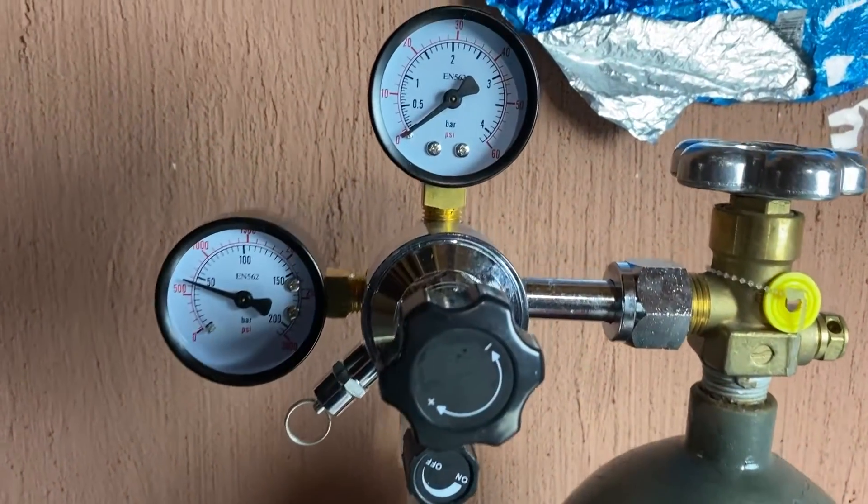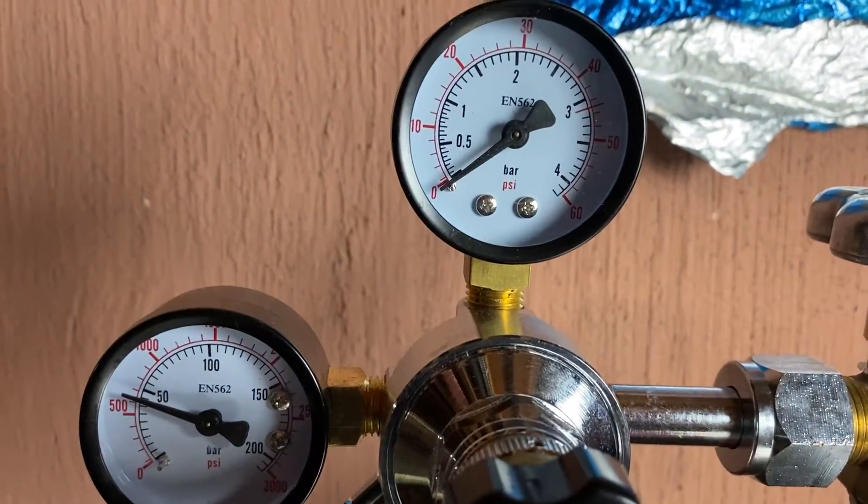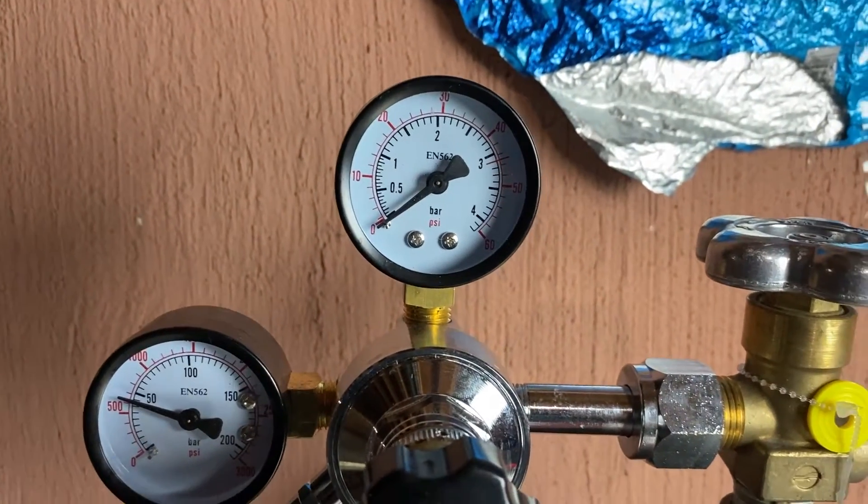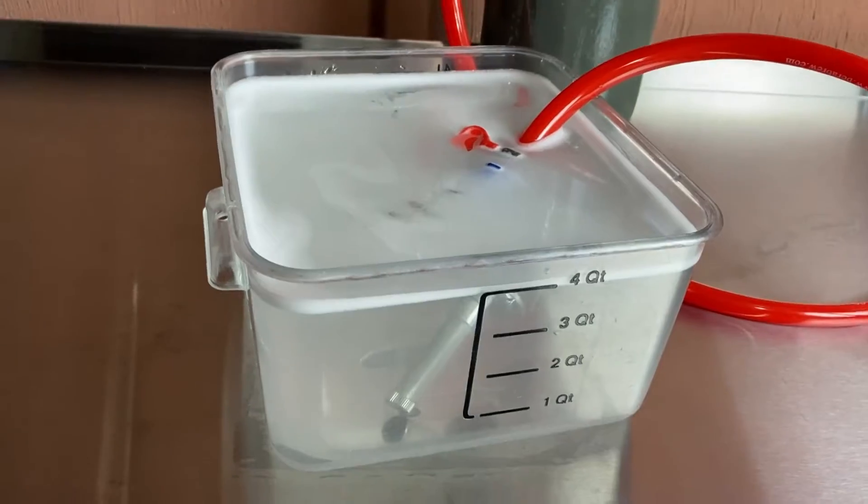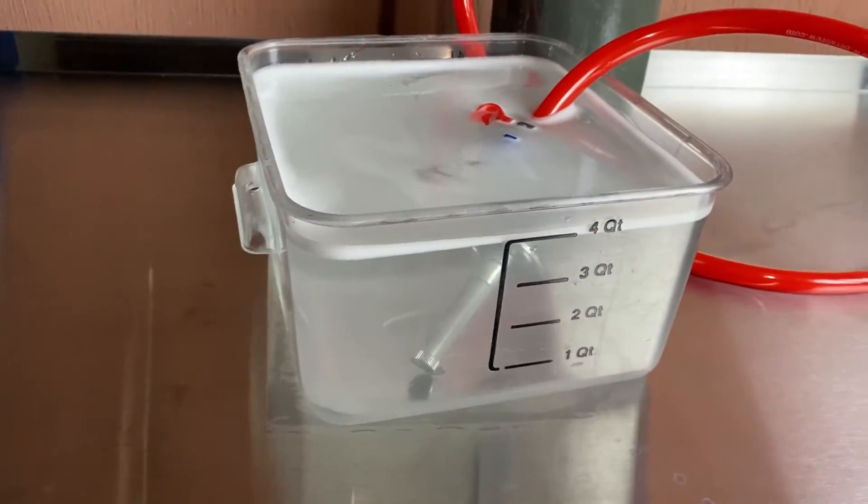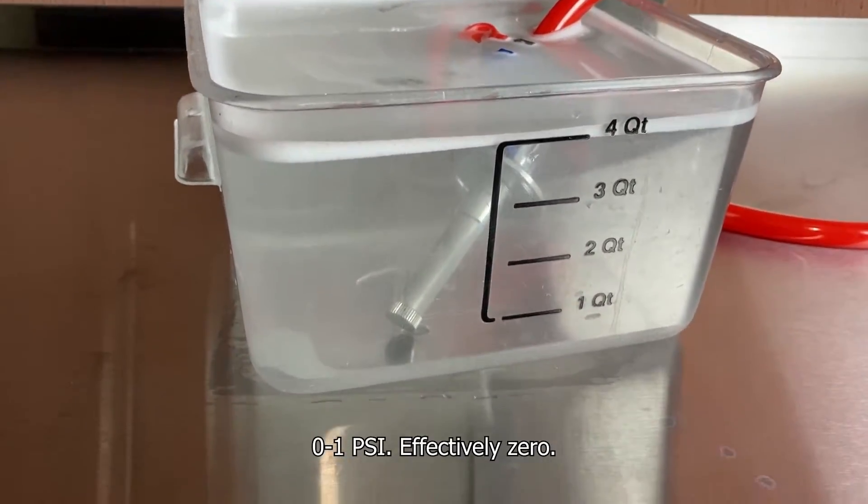Looking at my regulator, basically zero psi. So my determination would be that the wetting pressure of this carb stone in particular, a little two-incher for a five-gallon unitank, is zero psi.